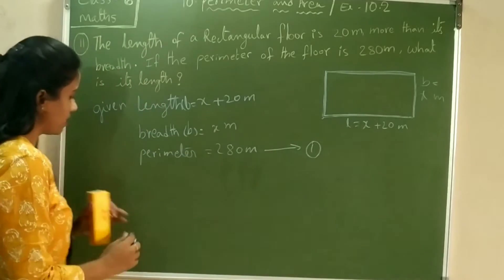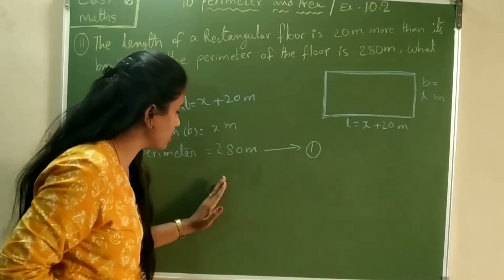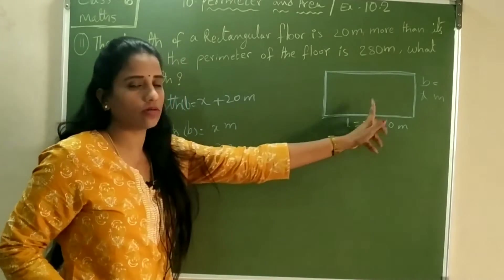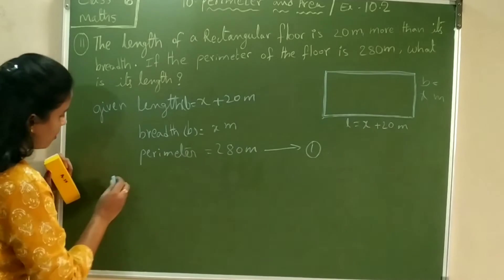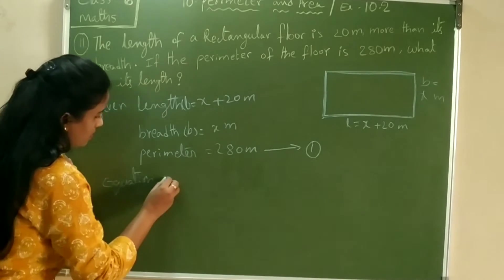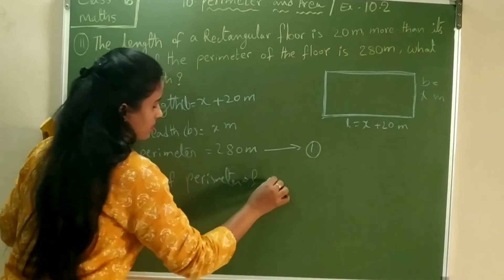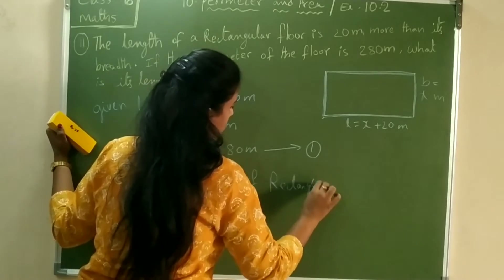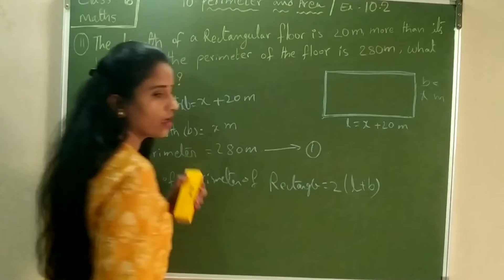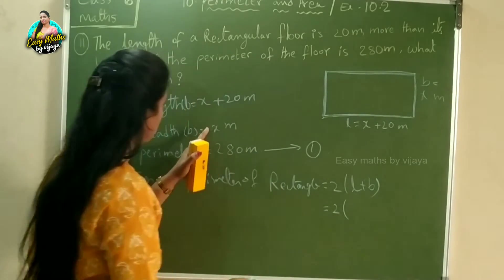Now write the equation for the perimeter of a rectangle. The formula for the perimeter of a rectangle is: Perimeter = 2 × (length + breadth), that is 2 into (L + B). Take this as equation 2.